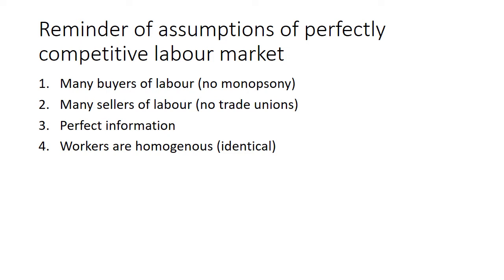Number three is perfect information — there's freedom of information around the labour market. All the buyers and sellers know of each other's existence, and there are no costs of negotiating labour contracts. There is also perfect mobility of workers, so workers can move costlessly and easily between different jobs. There is no geographical or occupational immobility of labour in the model.